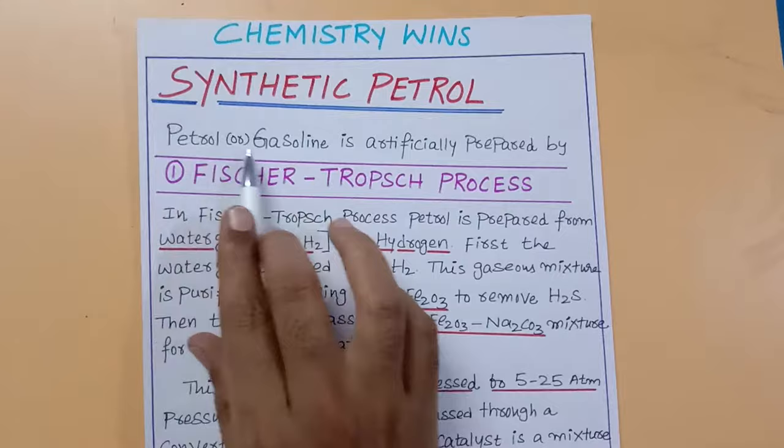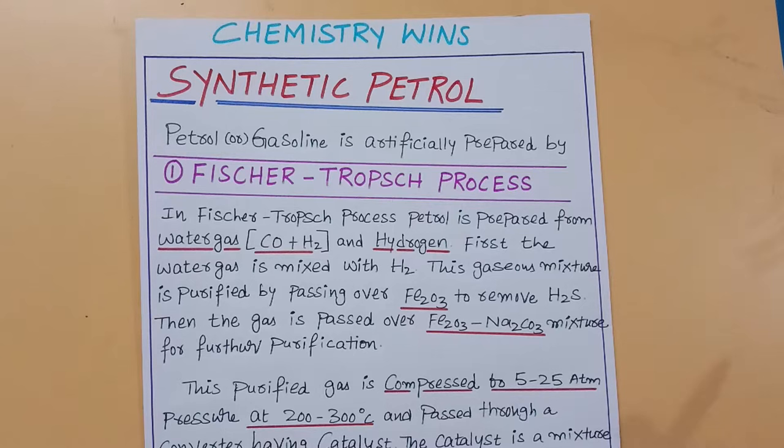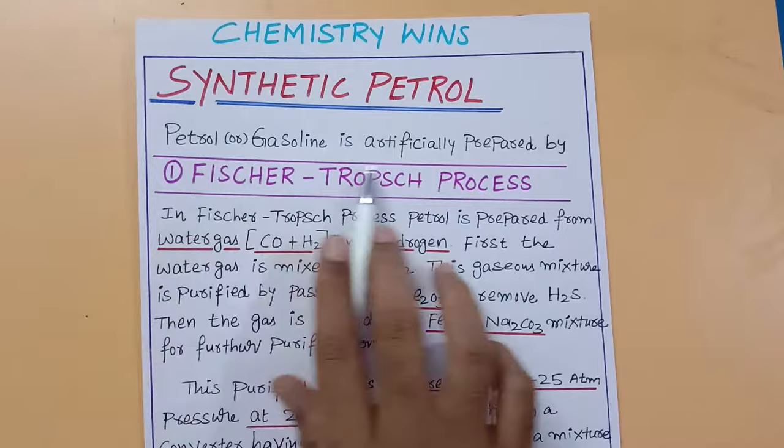Petrol is also called gasoline. It is artificially prepared by a method called the Fischer-Tropsch process. Petrol is a secondary fuel obtained from refining crude oil or petroleum. Because it has huge demand, there are some methods where we can prepare petrol artificially, synthetically.